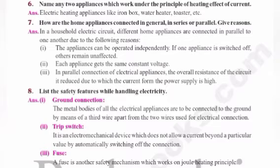Ground connection: the metal bodies of all the electrical appliances are to be connected to the ground by means of a third wire, apart from the two wires used for electrical connections.